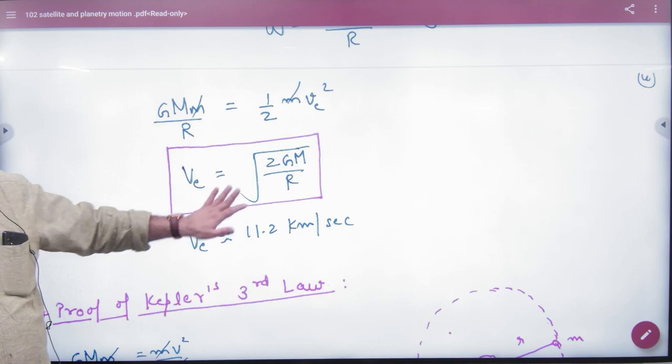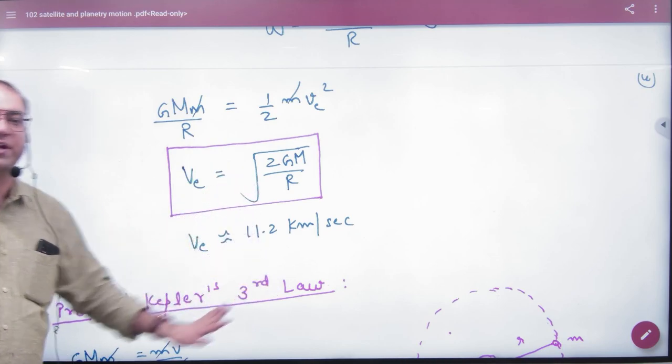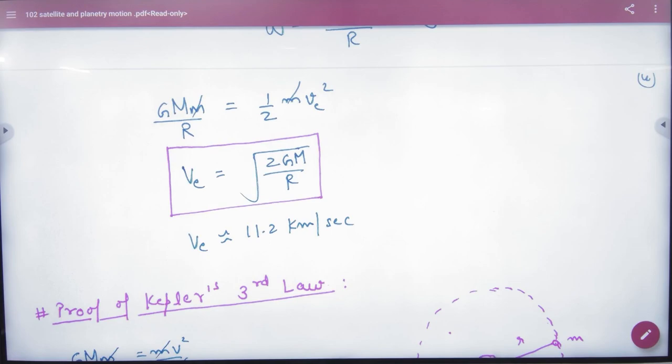Note that after putting all values, escape velocity's approximate value is 11.2 km per second.